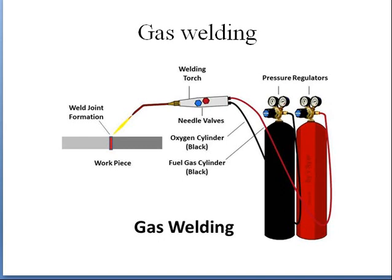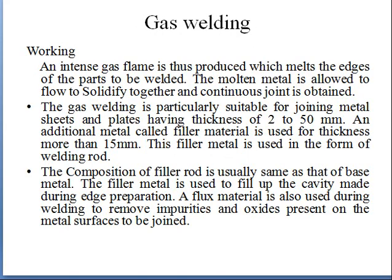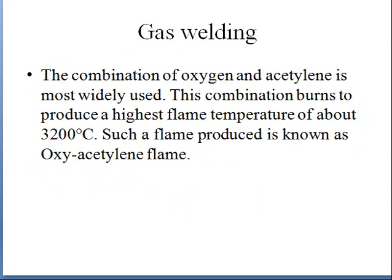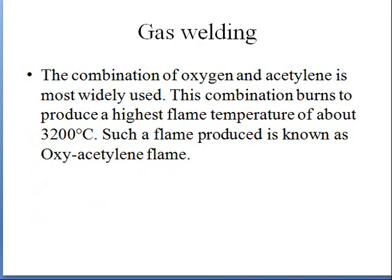Depending on the material of the workpiece, we control the flame using the control valves. The system is portable — you can move it to any location using lengthy wires. Depending on the gases used, different temperatures are achieved: oxy-acetylene gives 3200°C, oxy-hydrogen gives 2800°C, and oxy-butane gives 2700°C. The combination of oxygen and acetylene produces 3200 degrees centigrade.